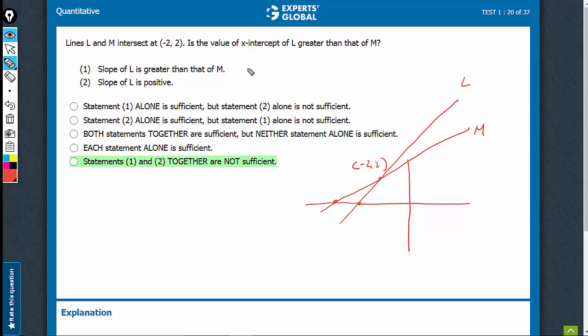So, we have got yes as an answer, that yes, x-intercept of L is greater than x-intercept of M, provided that slope of L is greater than slope of M. We have got a yes.